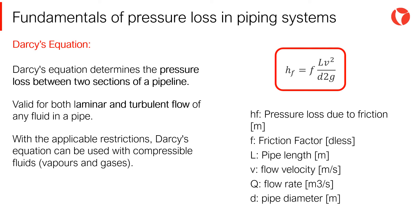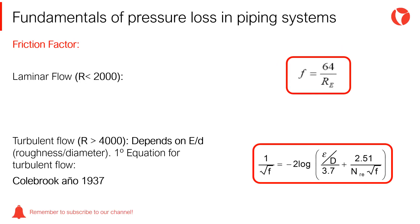Darcy's equation is the most universally used to determine the pressure loss in a pipeline, valid for both laminar and turbulent flow of any fluid in a pipe. The pressure loss depends on the friction factor, the pipe length, the velocity of the flow, the flow rate, and the pipe diameter. The most difficult part of Darcy's equation is determining the friction factor, due to the fact that it depends on the Reynolds number and the pipe wall roughness.